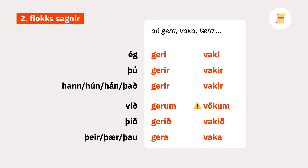As before, if the verb contains an 'a' in its stem, like váka, then there is a possibility of u-shift in the first-person plural form — for example, við hvökum.